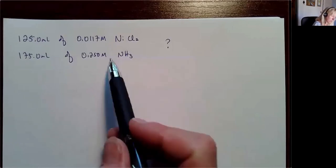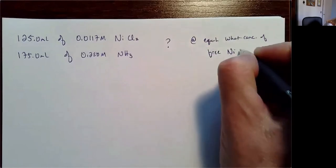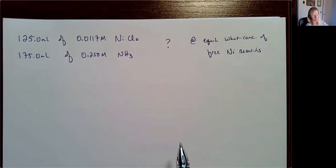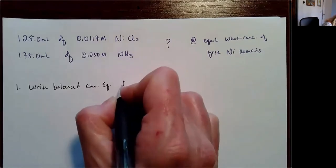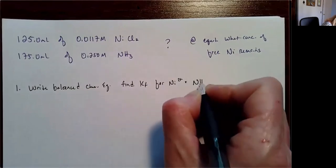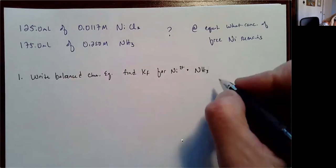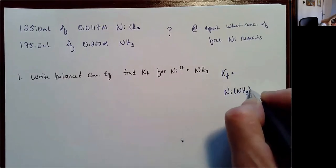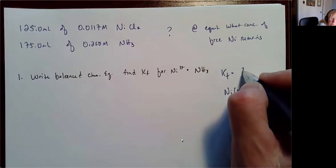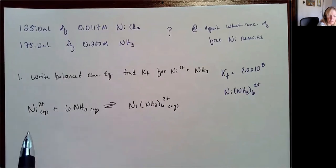I have these two solutions that I'm going to mix together, and I want to know at equilibrium what concentration of free nickel ions remains — not complexed. I have nickel ion, chloride ion, and ammonia. I don't think chloride is going to do anything, so I'm going to look up the KF for nickel with ammonia. From my table, I find nickel complexed with six ammonia groups — Ni(NH₃)₆²⁺ — with KF = 2.0 × 10⁸. That's my KF value and I'm going to write an ICE table.